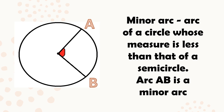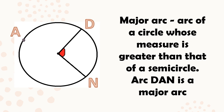A minor arc is an arc of a circle whose measure is less than that of a semicircle. Remember that the measure of a semicircle is 180 degrees. So if the arc is smaller than that, it's a minor arc. For example, arc AB is a minor arc because it is less than the measure of the semicircle. A major arc is an arc of a circle whose measure is greater than that of a semicircle. Looking at arc D-A-N, it's greater than the semicircle — greater than 180 degrees — so it's a major arc.